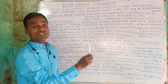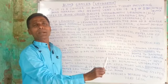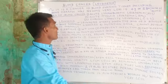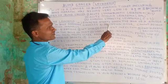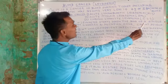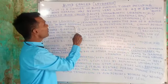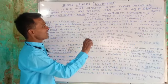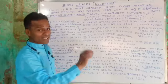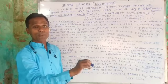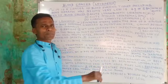What are the causes of leukemia? Leukemia starts when the DNA of a single cell in the bone marrow changes, and mutation occurs.